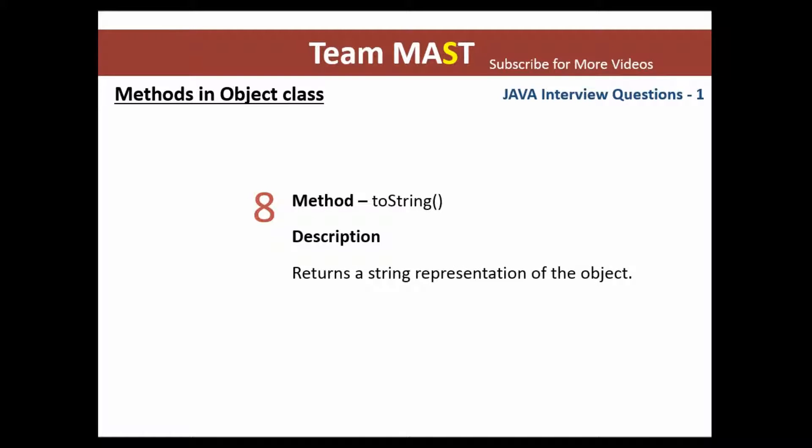Next, we have the toString method. This method will return a string representation of the object. However, if you are trying to print a POJO object, it will not print the string representation by default. You will have to override the toString method, and then you can customize the output.